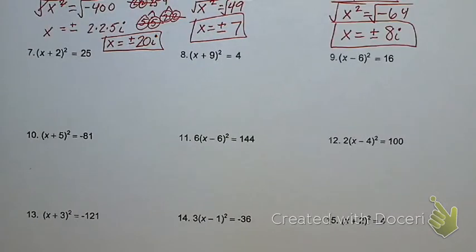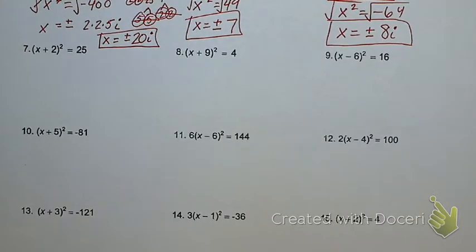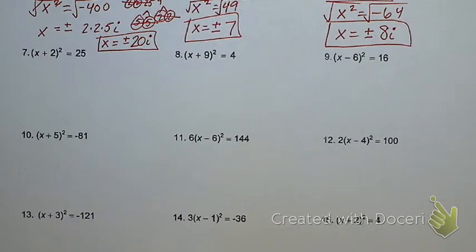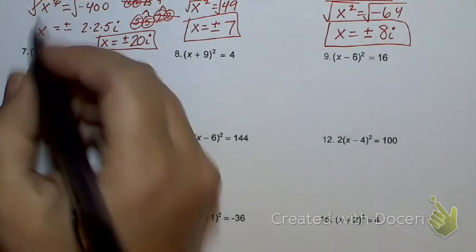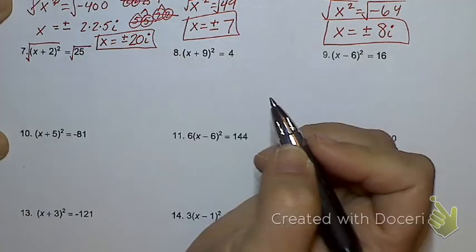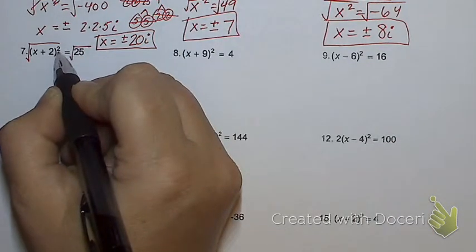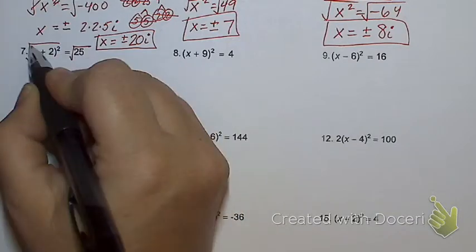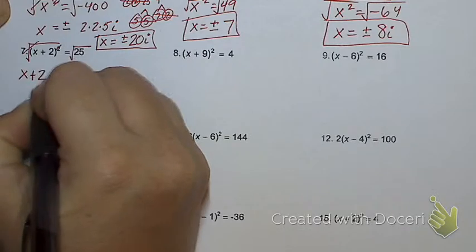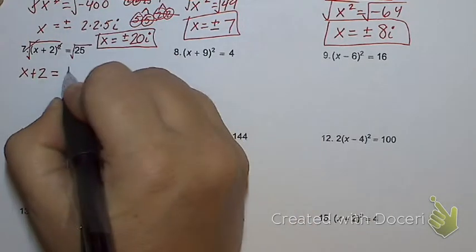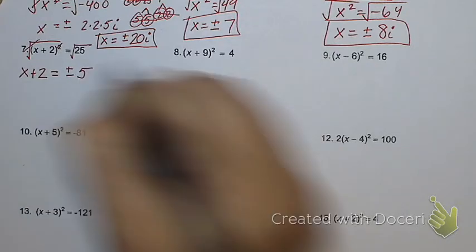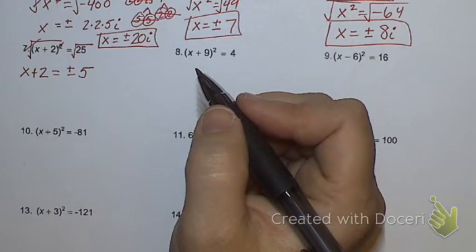Looking at number seven, listen very carefully to my question. Is the thing that's being squared by itself? It's not just X that's being squared. It's that whole parentheses. Is it by itself? Is the parentheses the only thing that's on that side of the equal sign? Yes. So I can square root right here. Because the thing that's being squared is by itself, I can square root. That gives me X plus two equals, what do I get here? Plus and minus five.